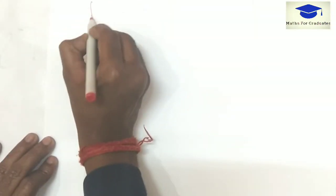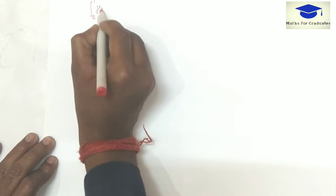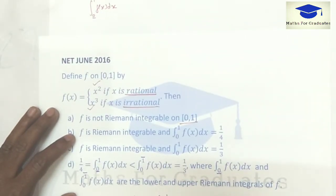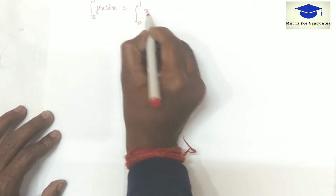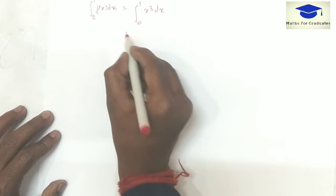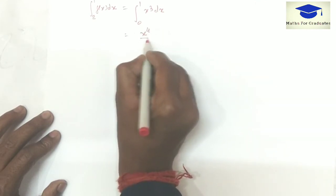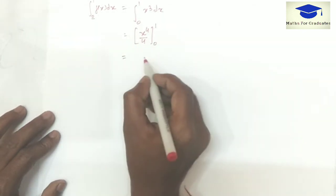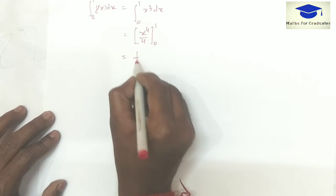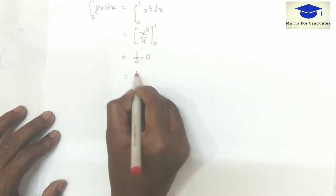Lower Riemann integral: for lower Riemann integral f(x) will be x cubed since it is less than x squared. Therefore on integrating it will be x raised to power 4 over 4, and the interval is 0 to 1. Now applying the limits we'll get 1 over 4 minus 0, which is 1 over 4.